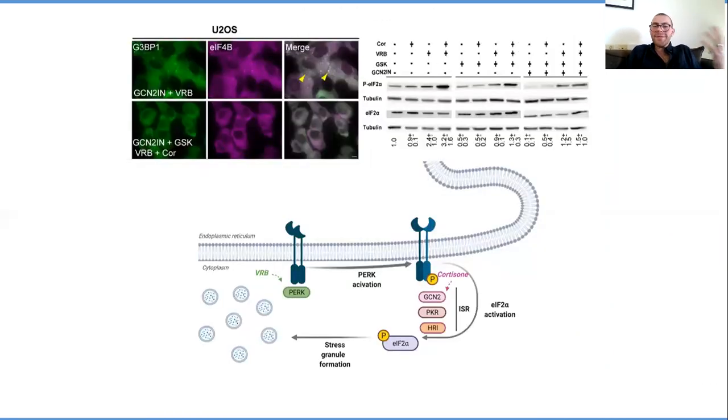To save you the long story, we're not going to go into all the Western blots and all the validation we did with immunofluorescence. But to sum it down, we see that there are many kinases that are active when stress granules form. VRB is activating one of them.